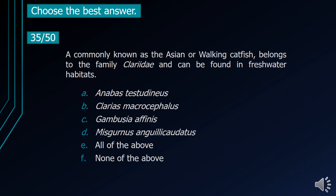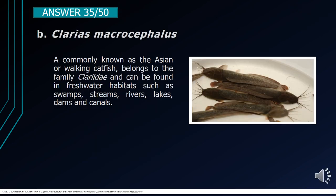Number 35. Commonly known as the Asian or walking catfish, it belongs to the family Clariidae and can be found in freshwater habitats. A. Anabas testudineus. B. Clarias macrocephalus. C. Gambusia affinis. D. Misgurnus anguillicaudatus. E. All of the above. F. None of the above. The correct answer is letter B, Clarias macrocephalus. It is commonly known as the Asian or walking catfish, belongs to the family Clariidae, and can be found in freshwater habitats such as swamps, streams, rivers, lakes, dams, and canals.